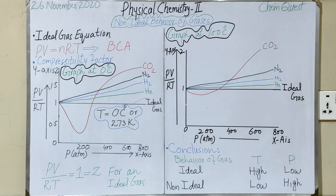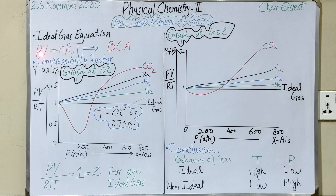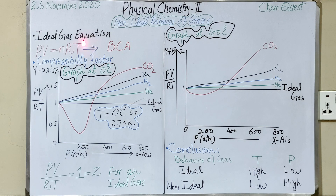Why is there no ideal gas, and why do all real gases show non-ideal behavior? For this, let us study the ideal gas equation PV = nRT, as all of you know. This is a combination of Boyle's law, Charles' law, and Avogadro's law — you can remember it simply as B, C, A.